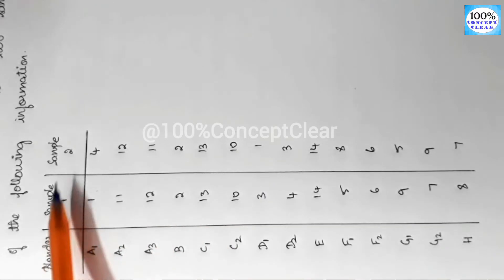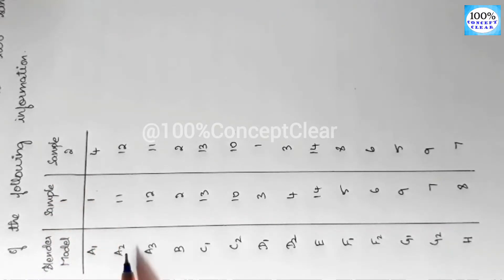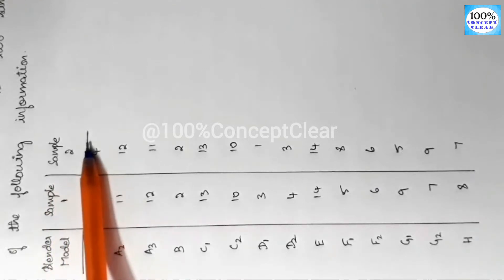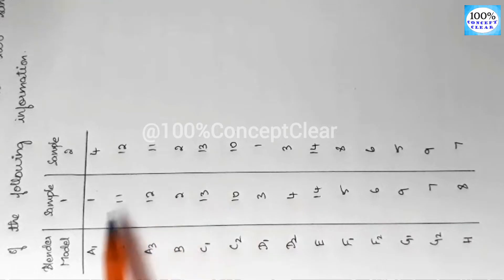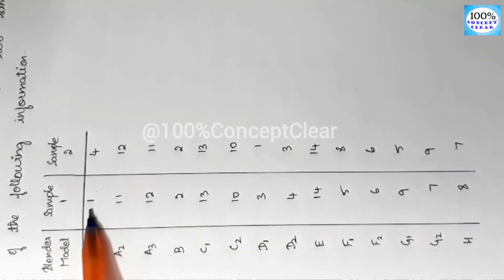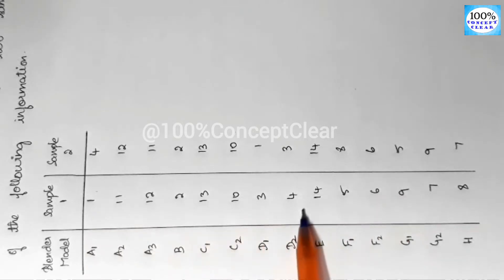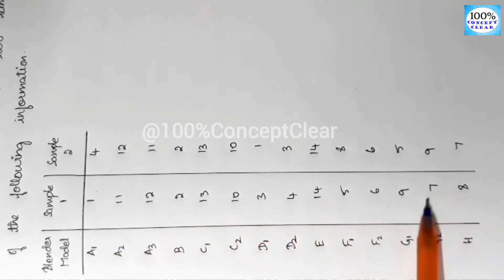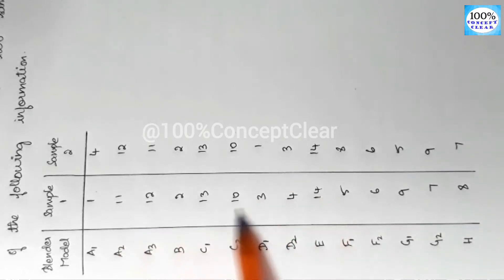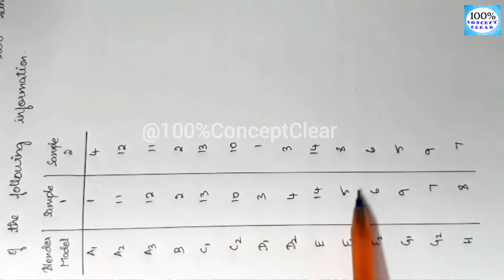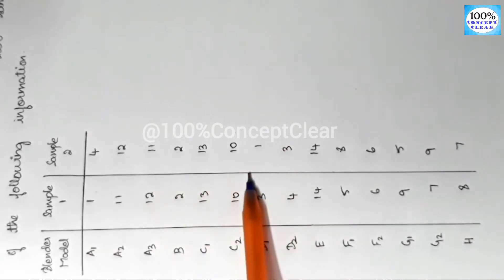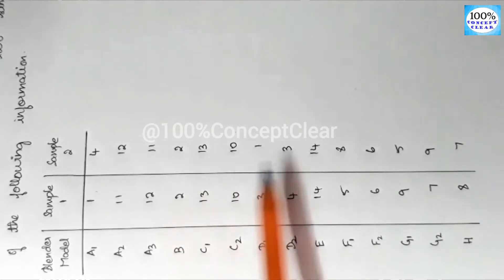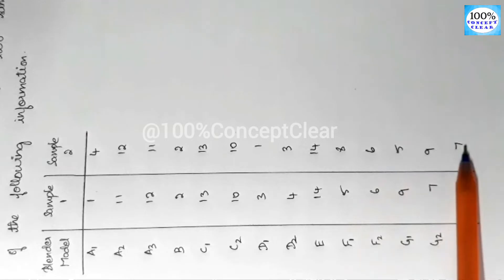In this problem we have Sample 1 and Sample 2, which is the blender model product. In Sample 1, we have 14 numbers: 1, 2, 3, 4, 5, 6, 7, 8, 9, 10, 11, 12, 13, 14. In Sample 2, we also have 14 ranks: 1 through 14. So both samples have 14 data points.